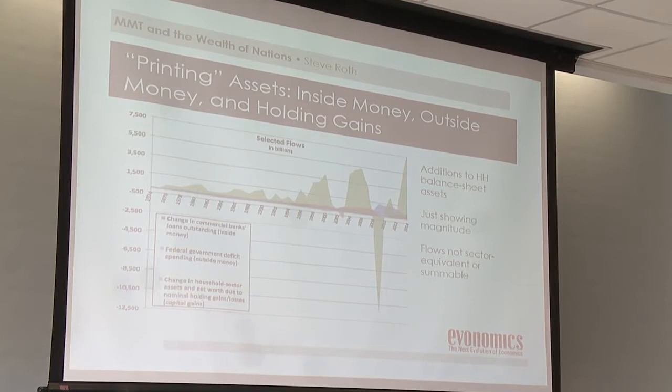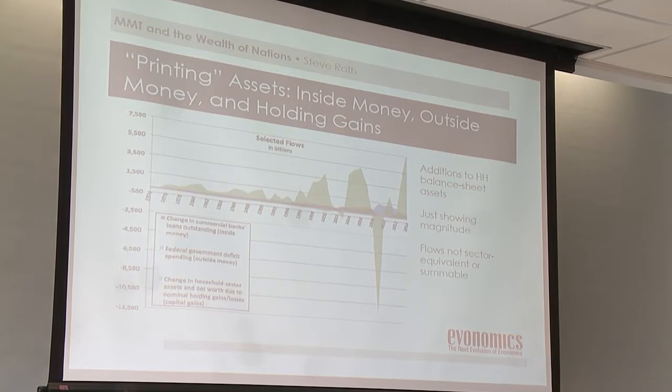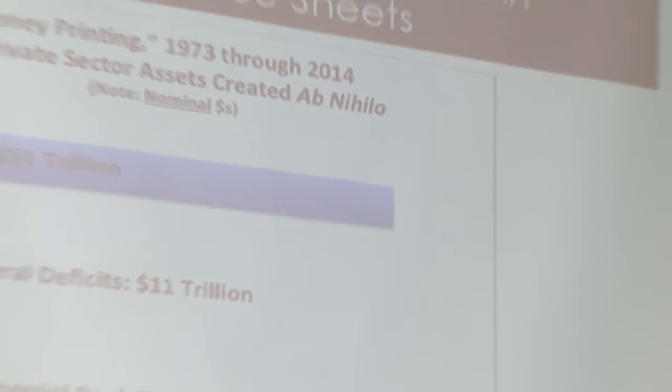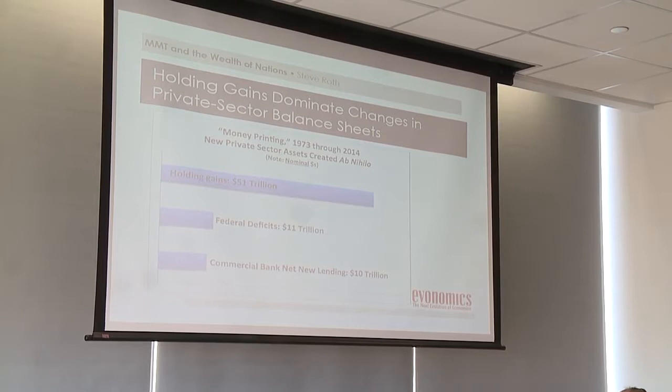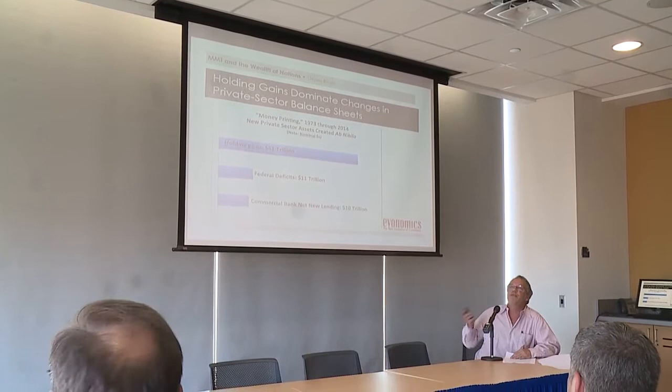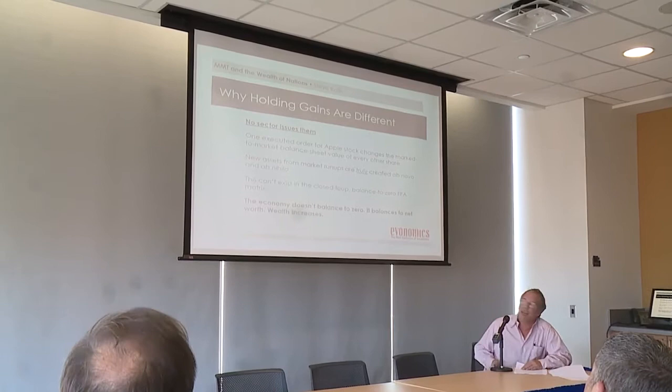Green is holding gains, orange is bank lending, and blue is government deficit spending — you can see the significant magnitude. Over 30 years, holding gains are five times either of the others in terms of additions to household sector balance sheets. And again, this is invisible in the flow of funds matrix.